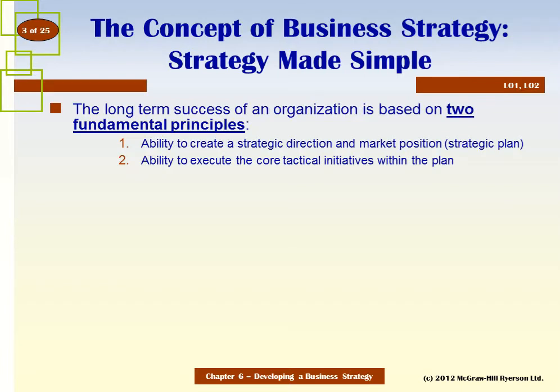The long-term success of an organization is based on two primary principles. The first is to develop a strategic direction and a market position for the company. Once that is done, the second is the ability to execute. We need to develop a solid strategy and then have the ability to execute that strategy throughout all levels of the organization.